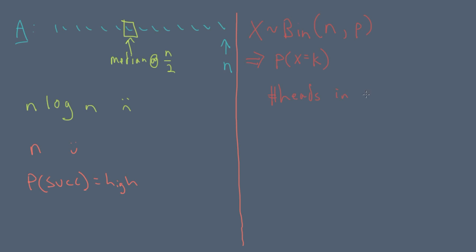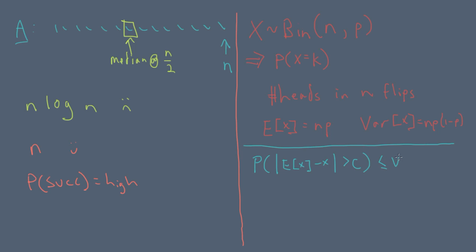The expected value of a binomial random variable can be shown to be n times p, and the variance can be shown to be n times p times (1 minus p). The second result we need from probability theory is Chebyshev's inequality, which tells us that the probability that a random variable deviates from its expectation by an amount greater than c is less than or equal to the variance divided by c squared. In other words, large deviations have a relatively low probability.